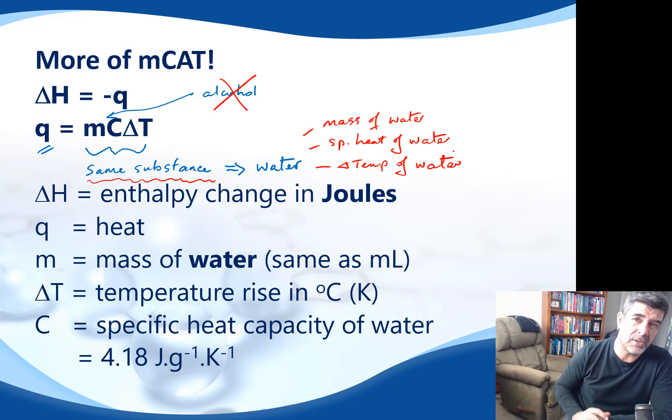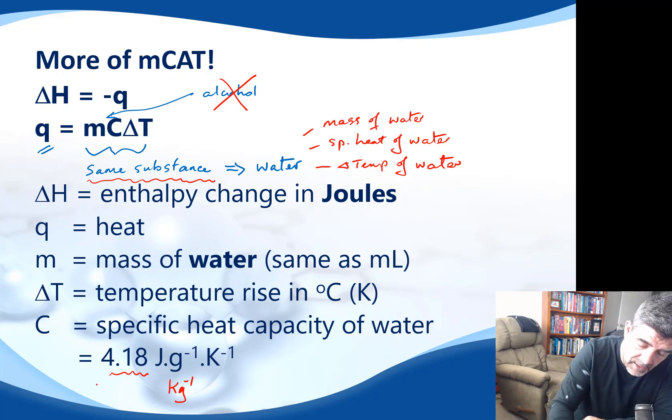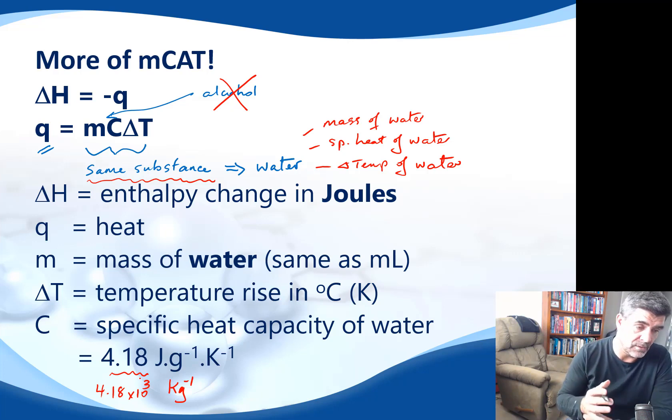The other thing that I've just changed slightly is that on most of the data sheets, you'll find that the value for the specific heat of water is given in kilograms, rather than in grams, so joules per kilogram per kelvin. And that means that the value here is often listed as 4.18 times 10 to the 3. When you convert from grams to kilograms, you're going to divide by 1,000, so our value for the specific heat is 1,000 times bigger.